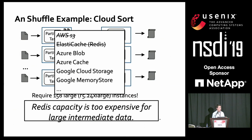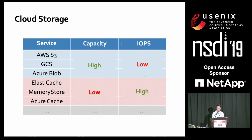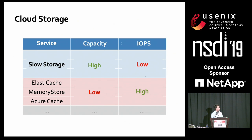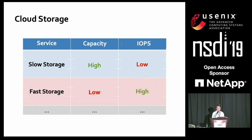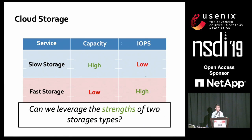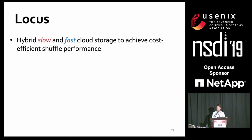After surveying all available cloud storage services, we find they fall into two broad categories: systems offering very cheap, high-capacity storage but suffering from bad IOPS, and fast storage systems with very good operations per second but expensive capacity. In Locus, we hybrid different types of storage to achieve cost-efficient shuffle. The intuition is to use faster storage to absorb the IOPS and create bigger chunks for slow storage.